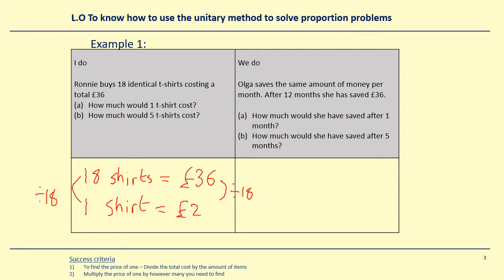For part B it says how much should five shirts cost? Well if one shirt costs £2, five shirts — five times the amount of shirts — are going to cost five times the price. So five times the shirts will cost five times the price, which is 2 × 5 = £10. Please copy down that example, pause the video, copy it down and then try the 'we do' by yourselves.